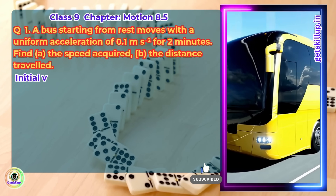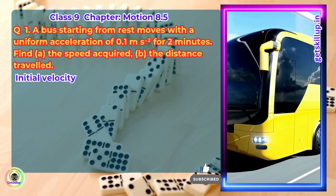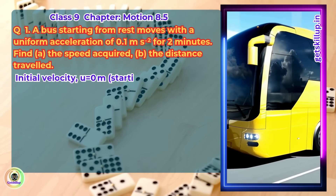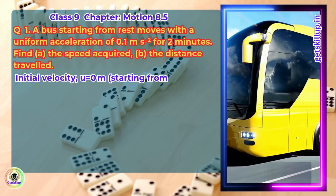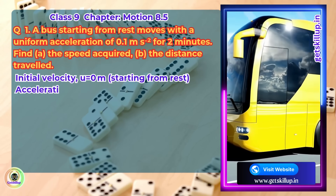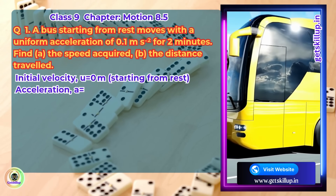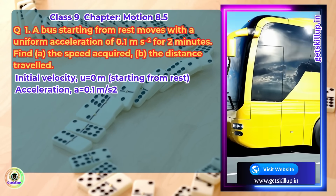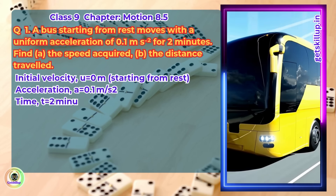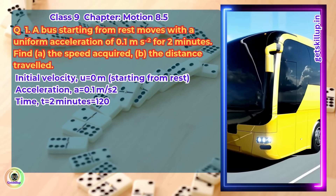Answer. Given: initial velocity u equals 0 meter per second (starting from rest), acceleration a equals 0.1 meter per second squared, time t equals 2 minutes which is equal to 120 seconds.